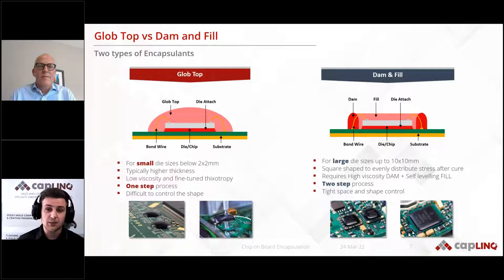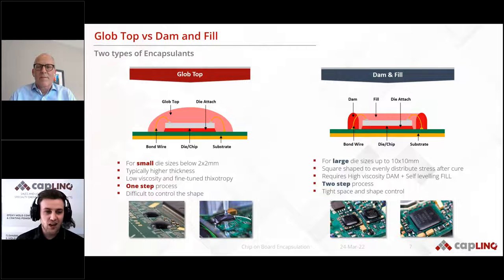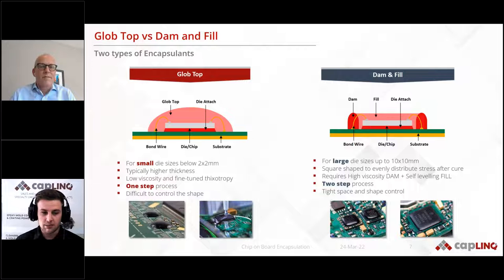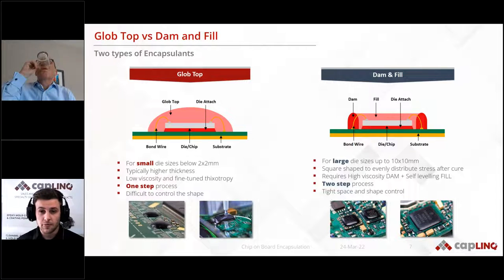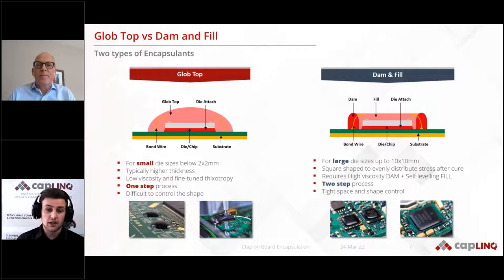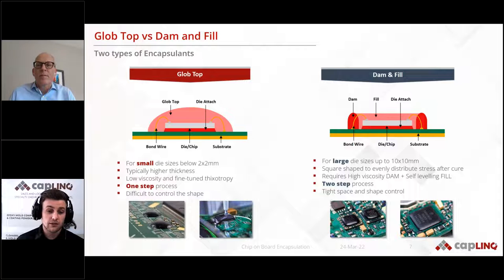Defining liquid encapsulants for chip on board, we can categorize them into two broad categories: globtops and dam-and-fill. Globtops are generally for smaller dies, up to 2×2 mm, and are ideal for a one-step process, making them the most cost-effective option. Dam-and-fill is generally for a larger die or larger area — it is a two-step process where you first set up a dam and secondly fill the space with an encapsulant, giving tight space and shape control.